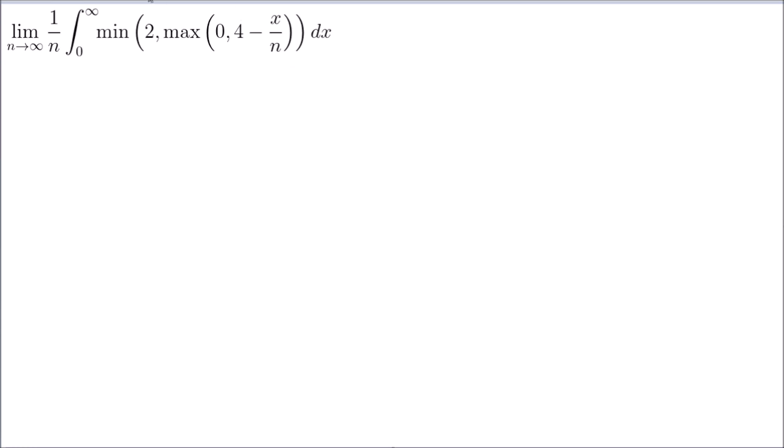So, but at the same time, we have a limit here with n and n here. What do we do? So, let's first, we need to find out the intersection between the function of 0 and 4 minus x over n. So, what I'm saying is, when is 0 equal to 4 minus x over n?